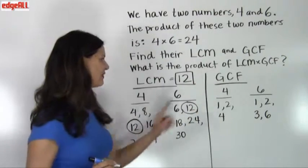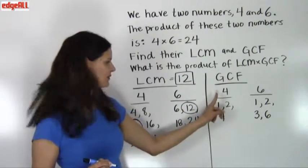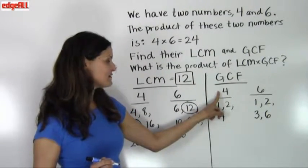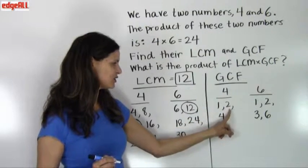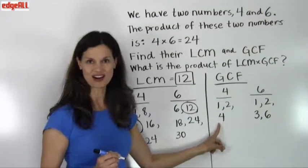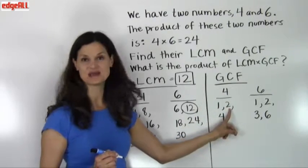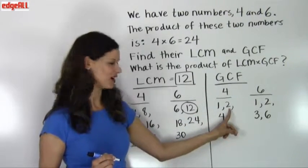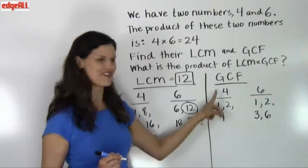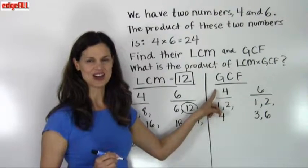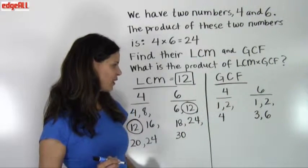Now let's look at the greatest common factor. I've listed the factors of 4 here: 1, 2, and 4. Because 1 times 4 equals 4, and 2 times 2 equals 4, so 1, 2, and 4 all divide evenly into 4.